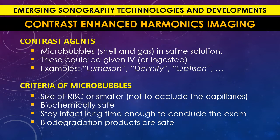Criteria number one: the microbubble size should be about the size of a red blood cell or smaller. Red blood cells travel through capillaries one by one, because the capillary diameter in microns does not allow more than one red blood cell at a time. If microbubbles were larger than red blood cells, they would block the capillaries — a very bad effect.